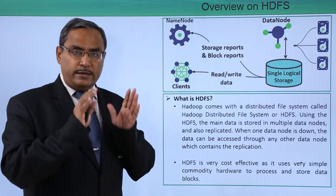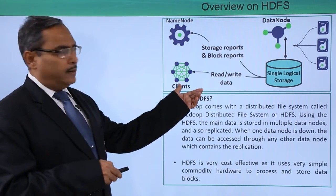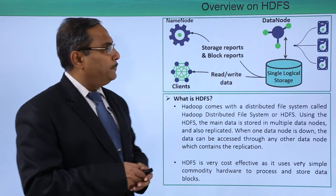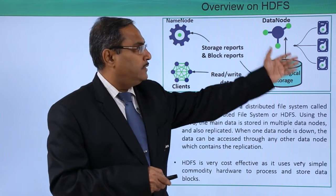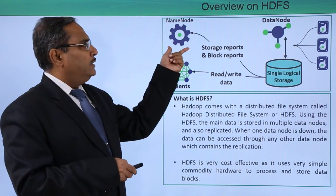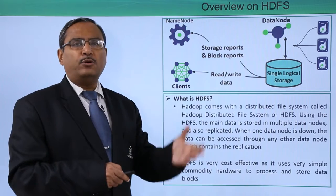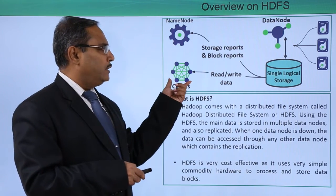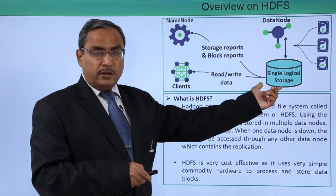Data will be stored in terms of blocks, and the block size will be 128 MB. Consider this diagram: we have a single logical storage which contains multiple data nodes, and the data is stored into multiple hard disks, as you can find here. Multiple hard disks reside on these multiple data nodes. There is also a name node which contains storage reports and block reports — it contains data about data, that is metadata.